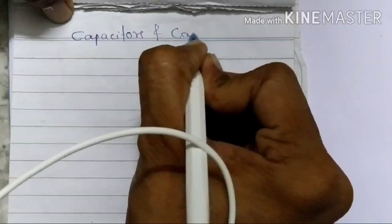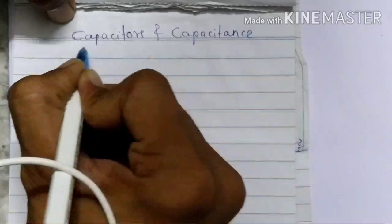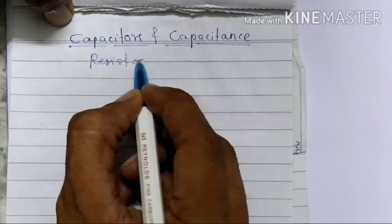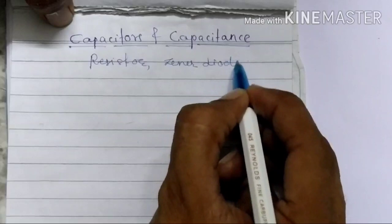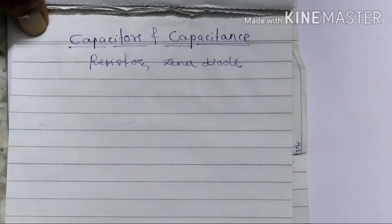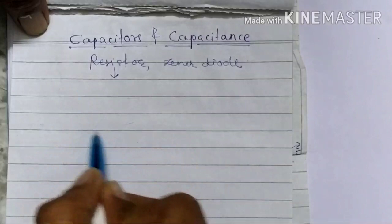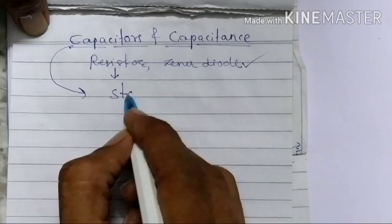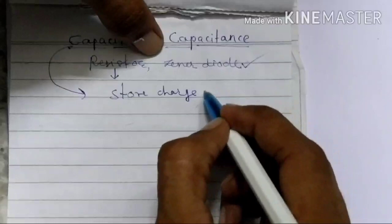In this video we are going to learn about capacitors and capacitance. In 11th standard we are familiar with some electrical components like a resistor or a Zener diode. Each electrical component is used according to its function: a resistor is used to control the current in an electric circuit, a Zener diode is used as a voltage regulator. A capacitor is a device used to store charge or to store electric energy.